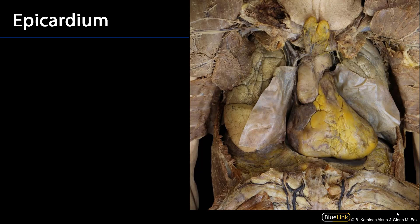This first establishing shot is of the heart in the thoracic cavity. We can see a right lung and a left lung, we can see the diaphragm, and we can see that the wall of the thoracic cavity has been incised on each side and reflected down. We can even see the internal thoracic artery and veins as they bifurcate into the superior epigastric and the musculophrenic vessels.